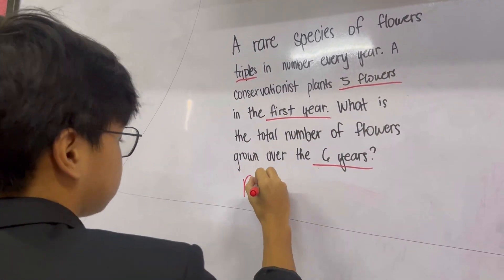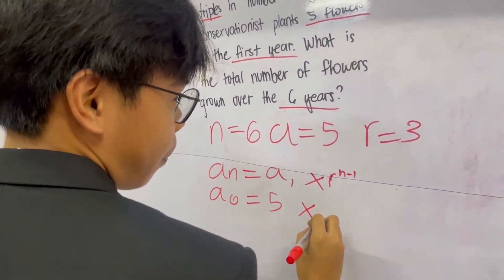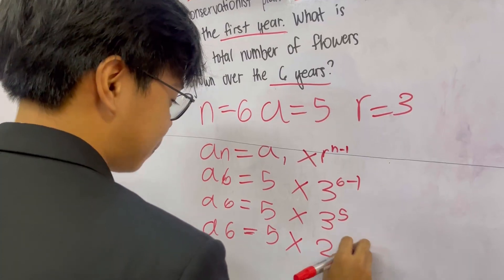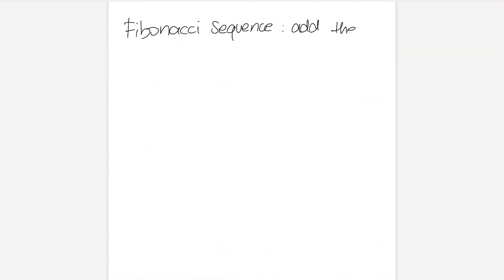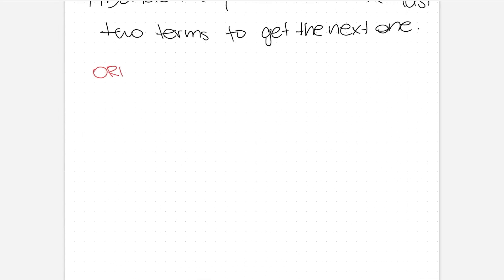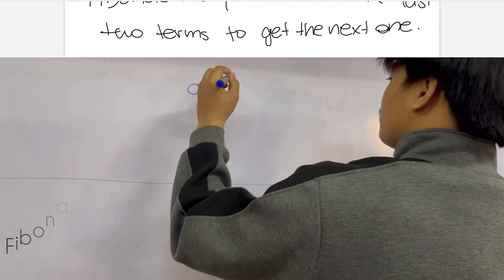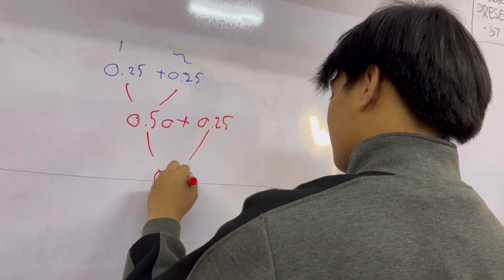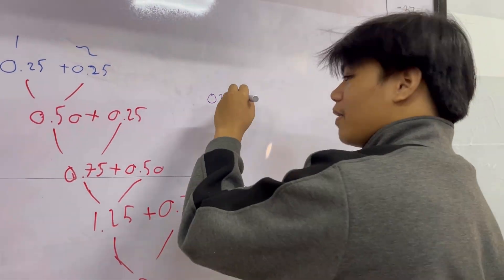In a word problem like this, first analyze the given numbers — underline all the key points and write the formula to solve the problem. A sub 6 equals 5 times 3 to the power of 6 minus 1. Next, A sub 6 equals 5 times 3 to the power of 5. Then A sub 6 equals 5 times 243. The final answer is A sub 6 equals 1,215 flowers. In Fibonacci, you basically just add the last two terms together. The original Fibonacci sequence is 1, 1, 2, 3, 5, 8, 13, and so on. In an example with 0.25 and 0.25, we add the last two terms to get the next, continuing until we reach our desired terms to get the final answer.